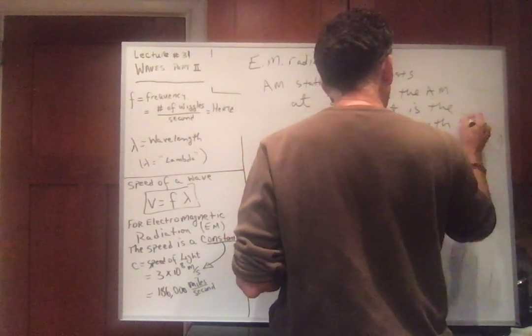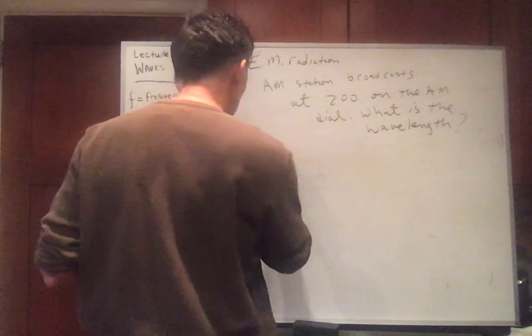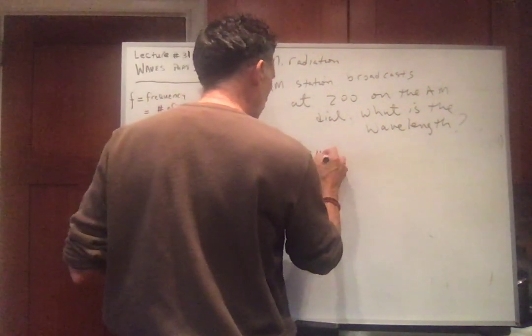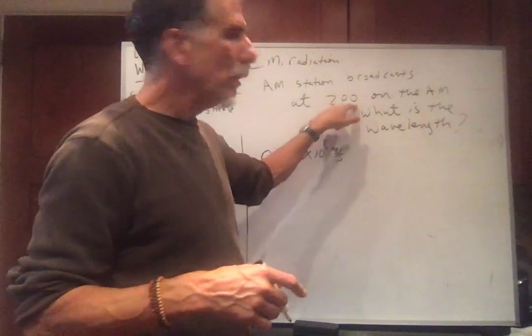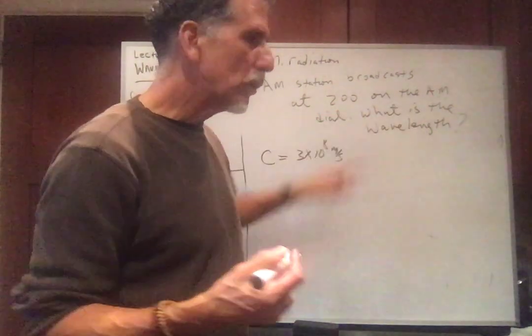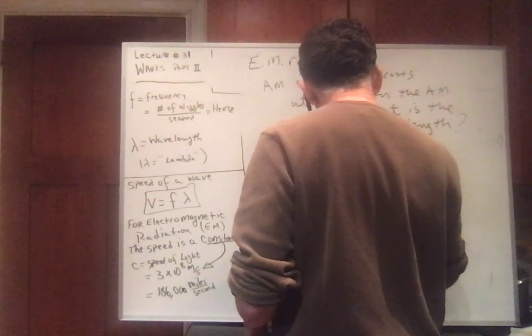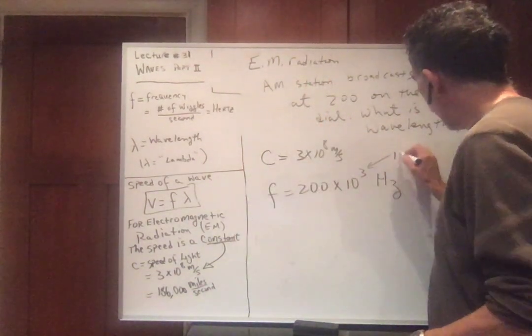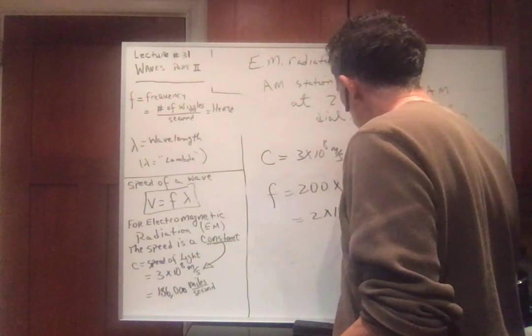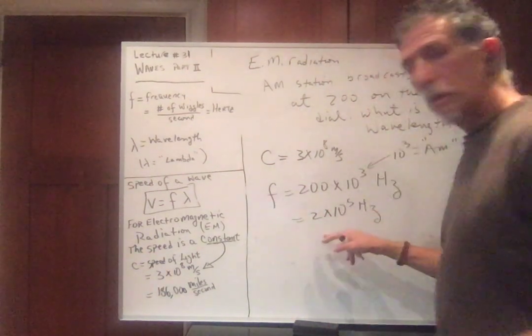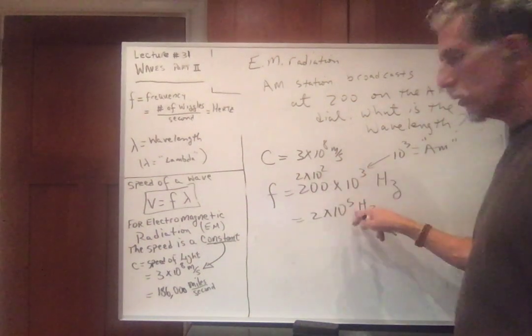So it's kilohertz. So it's 200 kilohertz. So the frequency is 200 times 10 to the third hertz. 10 to the third is AM. So you can write this as 2 times 10 to the fifth hertz. Can everybody see why? This is 200. This is 2 times 10 to the second, right? 10 to the second, 10 to the third is 10 to the fifth.